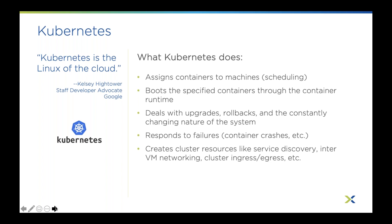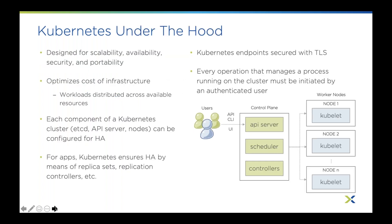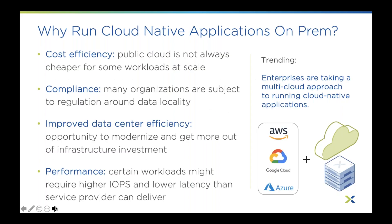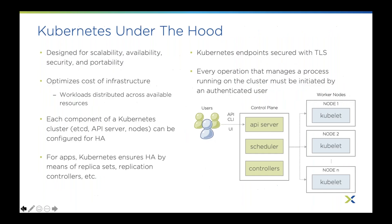Kubernetes has really risen to become the de facto standard — everything now gravitates toward Kubernetes in the ecosystem. It's a system designed for scalability, availability, security, and portability. It's a great way to optimize the cost of your infrastructure and to distribute workloads across systems where resources are available. Each component can be configured for high availability. In many cases, you'll have two or more master nodes in an HA configuration.